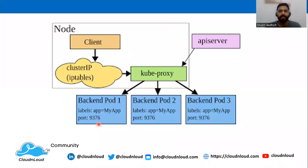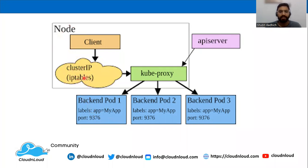Kube-proxy uses IP tables and IPVS in the Linux kernel to manage network traffic. As you can see in the diagram, we have a node with a cluster IP obtained from IP tables in the Linux kernel, which is being used by kube-proxy to communicate with the backend pods in the cluster.